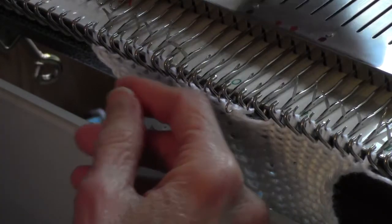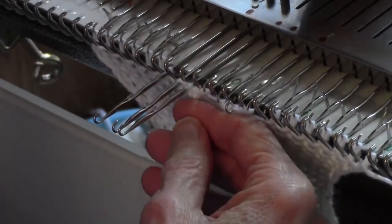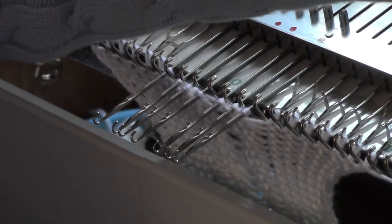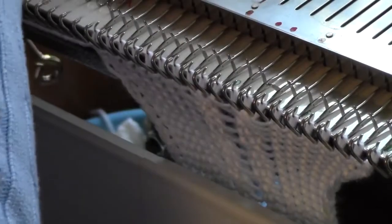you'll find that your machine will knit through this much better if you put all of these needles out into hold position and then knit across. I do four rows.